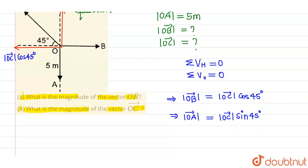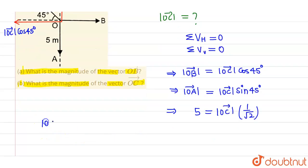So we know that magnitude of OA vector is 5 meters. So this will be 5 equals to magnitude of OC vector into sin 45 degrees, which is 1 by root 2. So from here, I will be getting magnitude of OC vector equals to 5 root 2 meters.